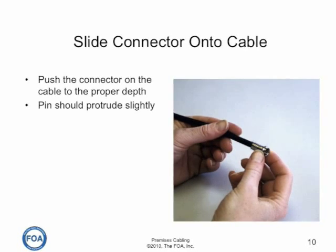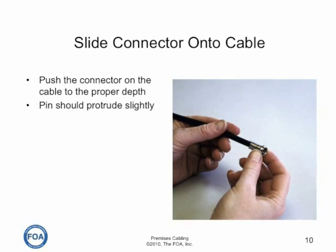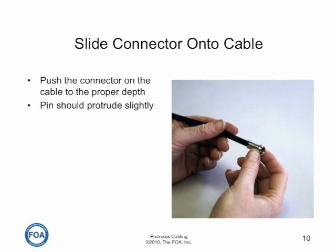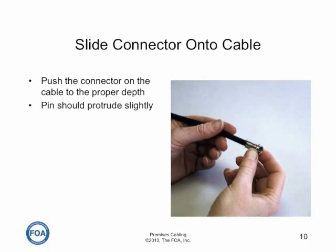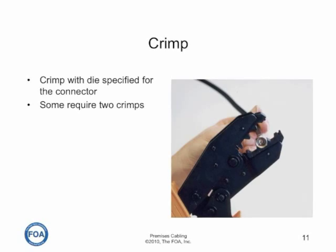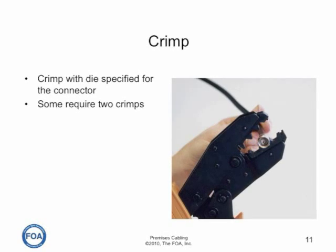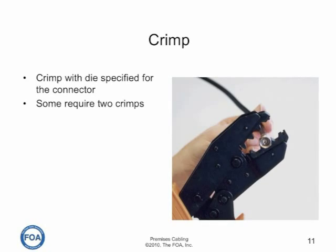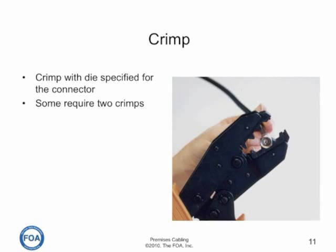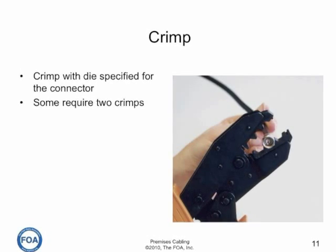Then you simply push the connector on the cable to the proper depth. The pin should protrude slightly. Crimp the connector with a die specified for the connector — and in fact the type of crimp tool if you're using compression connectors. Some connectors require two crimps for proper crimping.